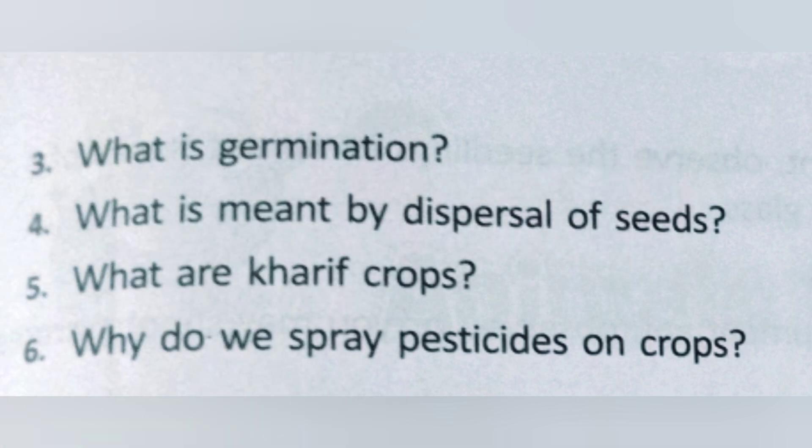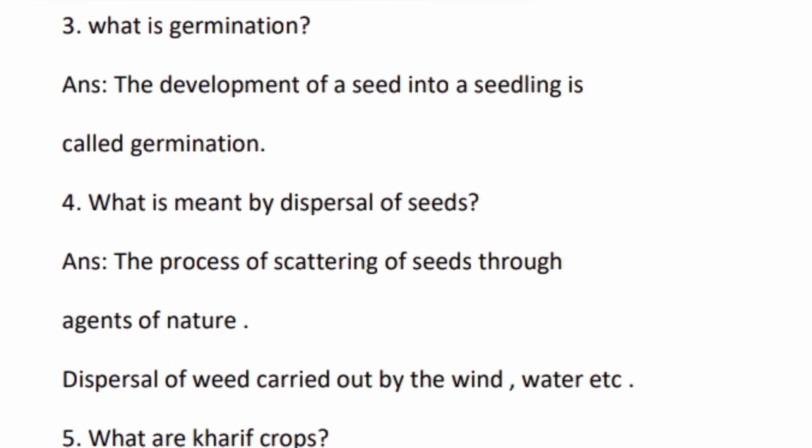Question number three: what is germination? The development of a seed into a seedling is called germination. Question number four: what is meant by dispersal of seeds? The process of scattering of seeds through agents of nature — dispersal of seeds carried out by wind, water, etc.